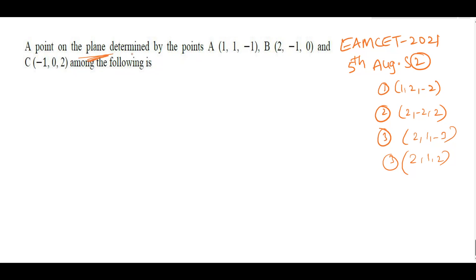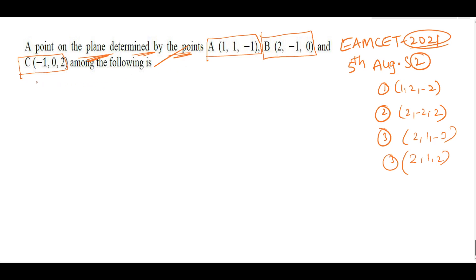Problem 4 (M-set 2021, 5th August): A point on the plane determined by A(1, 1, minus 1), B(2, minus 1, 0) and C(minus 1, 0, 2). Options: (1) 1, 2, minus 2; (2) 2, minus 2, 2; (3) 2, 1, minus 3; (4) 2, 1, 2. The equation of the plane through three points uses the determinant formula: |x minus x1, y minus y1, z minus z1; x2 minus x1, y2 minus y1, z2 minus z1; x3 minus x1, y3 minus y1, z3 minus z1| = 0.